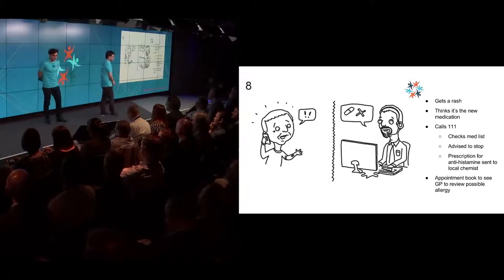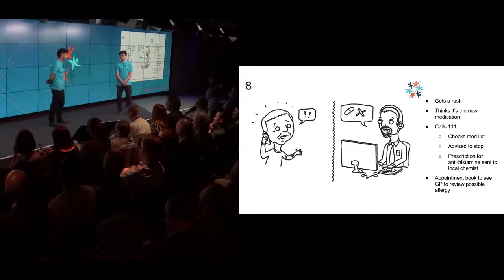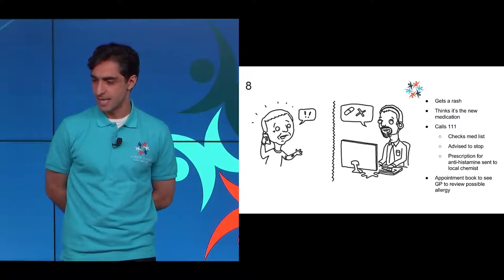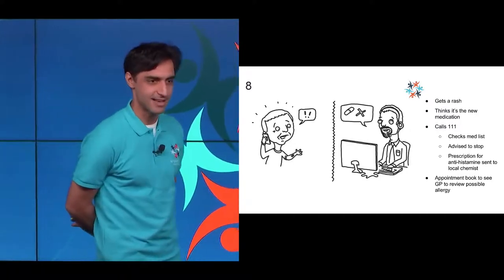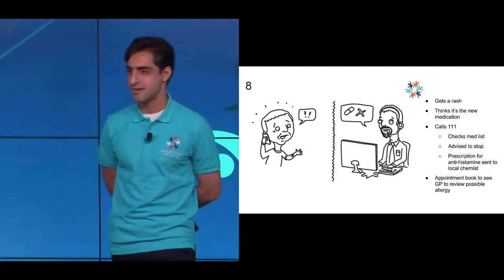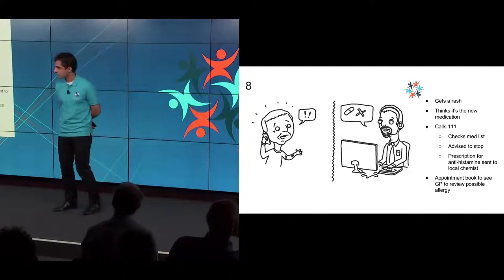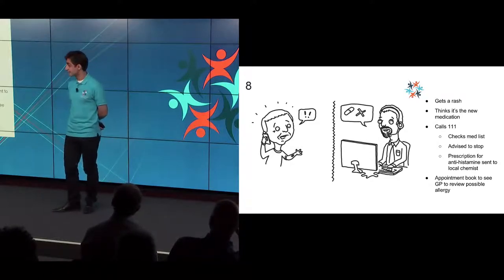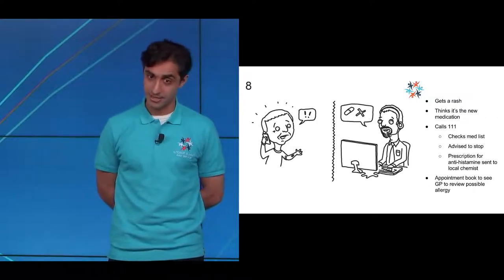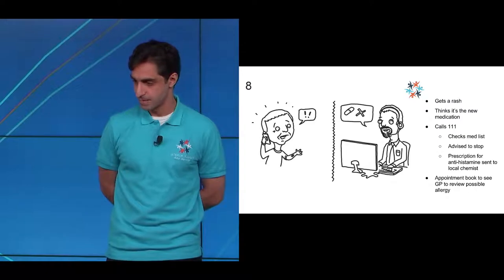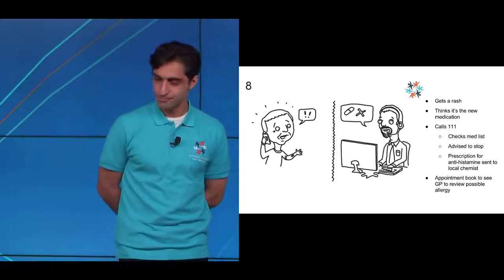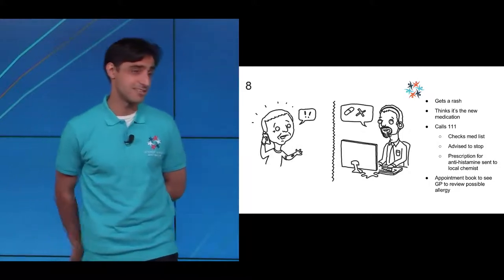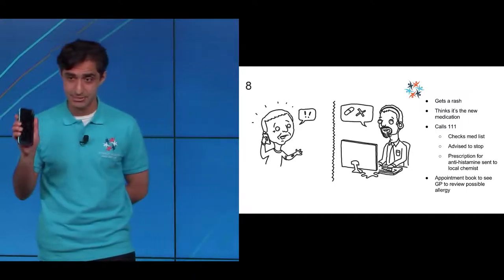He starts taking his medication, and he gets a rash. So what might he do? He'll call for help - the 111 service. And beautifully, they will also have access to his medication, because we're in a connected health and care system. You won't have to go through things - I've worked in 111, and it does take time when you have to ask the patient what you're on. It's just minutes that are wasted. The call handler will say please stop taking that, we probably have a problem here, and prescribe some antihistamine that's sent to the local chemist and magically appears on his app. The call handler books a GP appointment in that connected system.